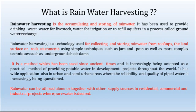What is basically rainwater harvesting? Rainwater harvesting is nothing but the accumulation and storing of rainwater. It has been used to provide for drinking and for livestock. It can be used as water for irrigation or to refill aquifers in a process called groundwater recharge. Rainwater harvesting is a technology used for collecting and storing rainwater from rooftops, the land surface or rock catchments using simple techniques such as jars and pots.